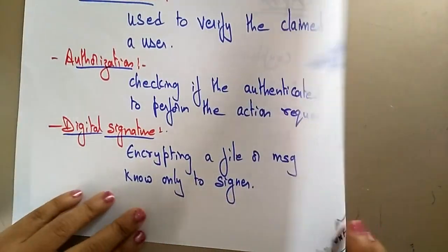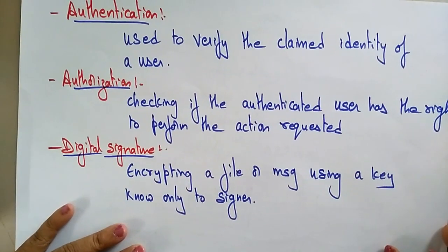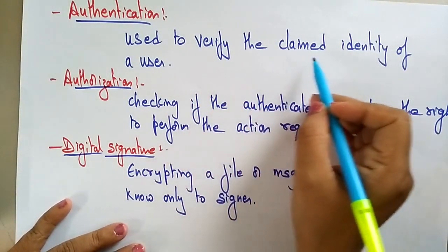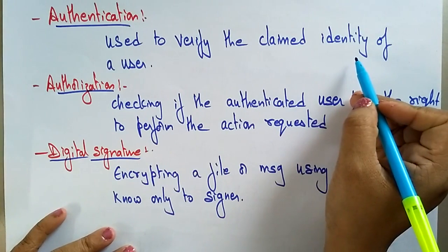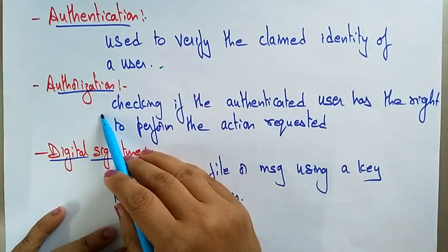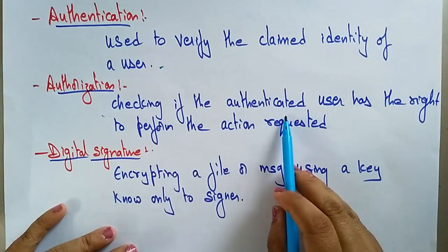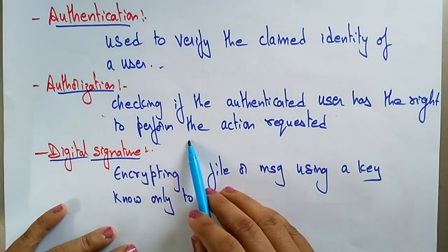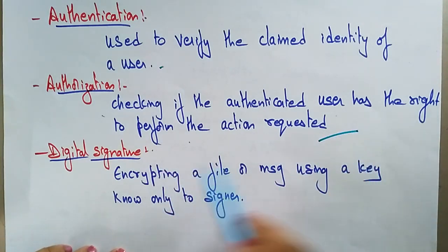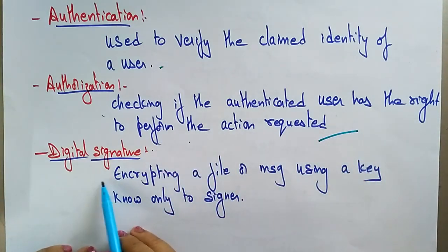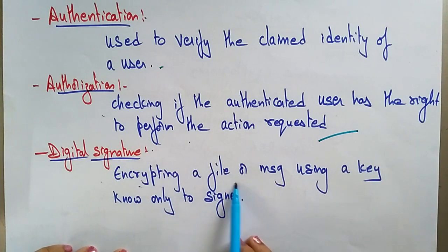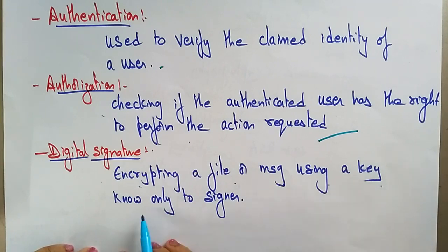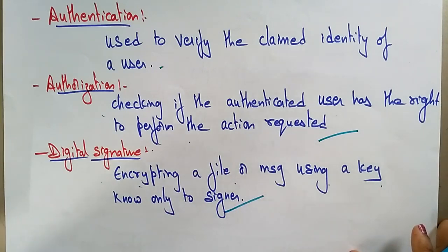Next is authentication, which is used to verify the claimed identity of a user. Then authorization checks if the authenticated user has the right to perform a requested action. Digital signature involves encrypting a file or message using a key — if that key is known only to the signer, it is called a digital signature.